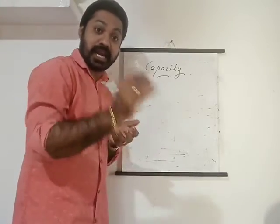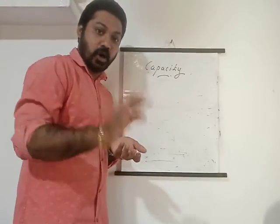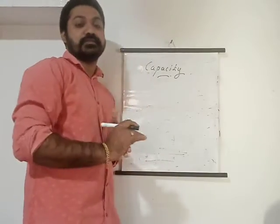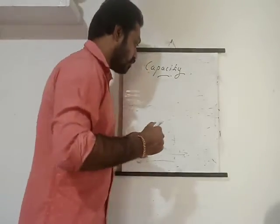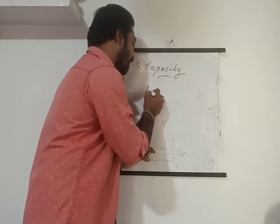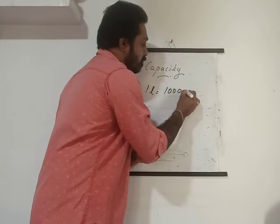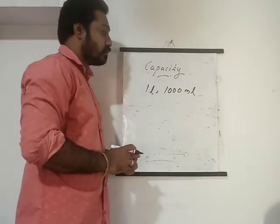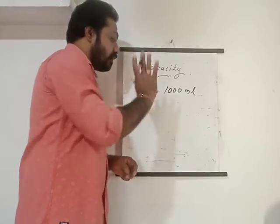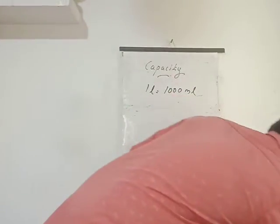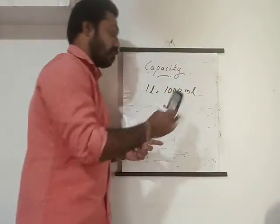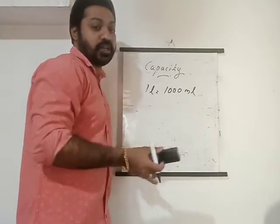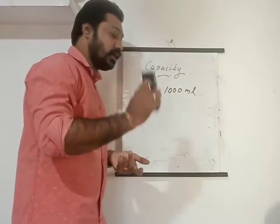Just like kilometer and meter are used for measuring length, and kilogram and gram for weight, in capacity we use milliliter and liter. The basic relationship is: one liter is equal to one thousand milliliters. That is the key fact — one liter equals one thousand milliliters.